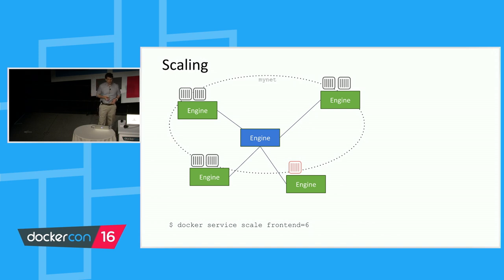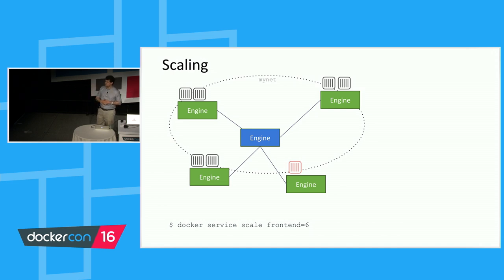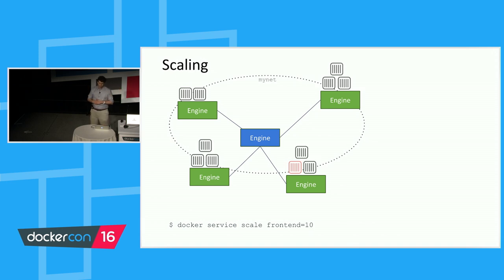Let's talk about scaling. Andrea showed this in the keynote demo. The command is 'docker service scale', followed by the service name equals the number you want. Here I'm scaling frontend from three to six — three more containers come up on the same overlay network with everything configured the same way. You can scale further to ten and the scheduler will schedule more containers. You get the idea.